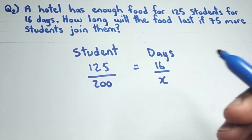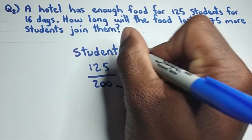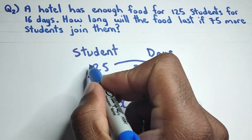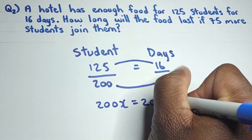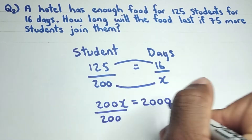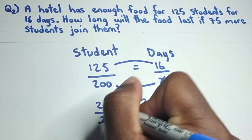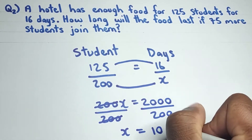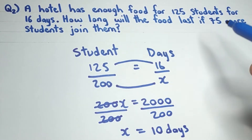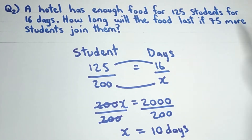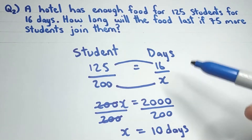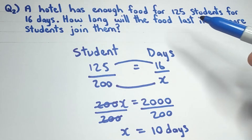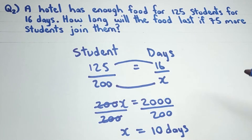Being an indirect proportional problem, we multiply straight across: 200 times x gives 200x, equal to 16 times 125 which is 2000. Dividing both sides by 200 gives x = 10 days. So the food will last 200 students for 10 days. If we increase the number of students, the number of days the food lasts decreases — confirming this is an indirect proportional problem.